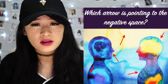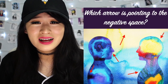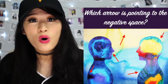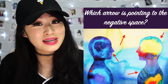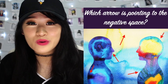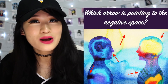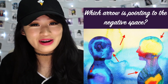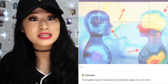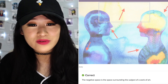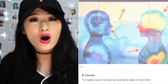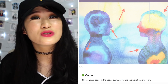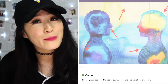Which arrow is pointing to the negative space? What is negative space? All of the arrows are pointing to the people and there's one arrow pointing to nowhere. It's pointing to negative space — the arrow is literally pointing to the words 'negative space.' Maybe that's a hint, maybe it's a trick question. I'll go with this arrow. Oh my gosh, it's actually correct! The negative space is the space surrounding the subject of a work of art. It wasn't a trick question — I just chose it because it was pointing to the words 'negative space,' but hey, we still got it correct.